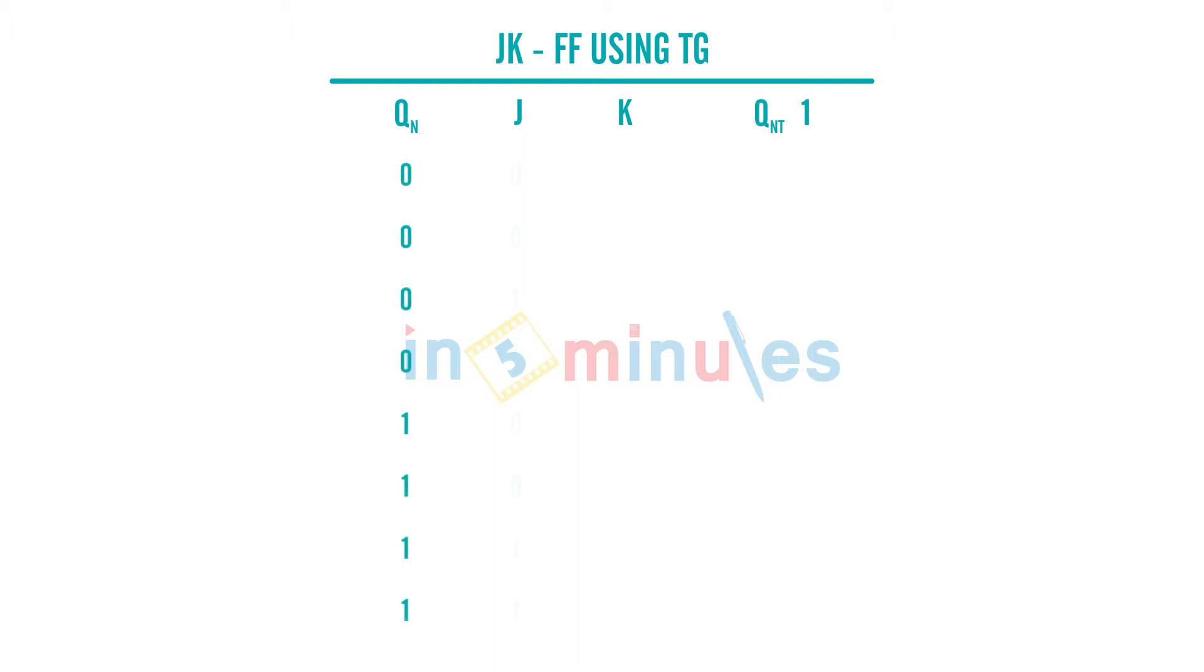We know this truth table we have studied in DCD or digital circuit design. Let's quickly fill this up. When all the three inputs are 0 or my J and K both are 0, my output is my previous value which is QN.